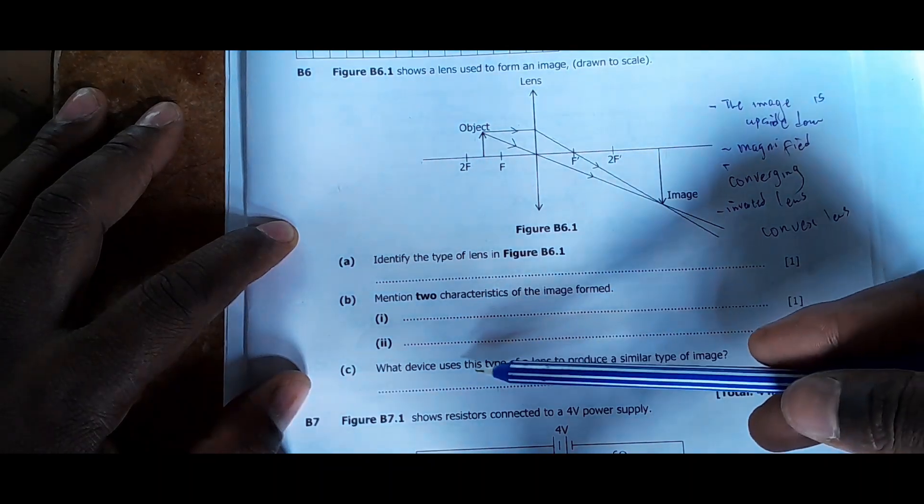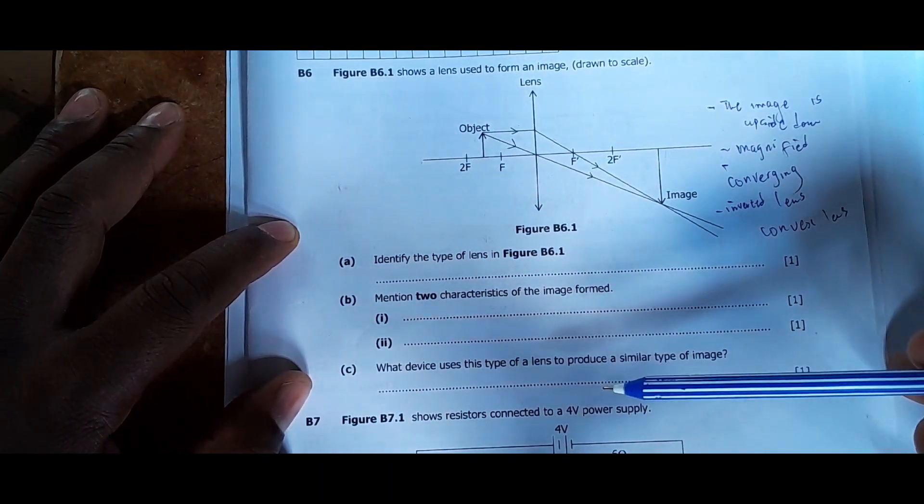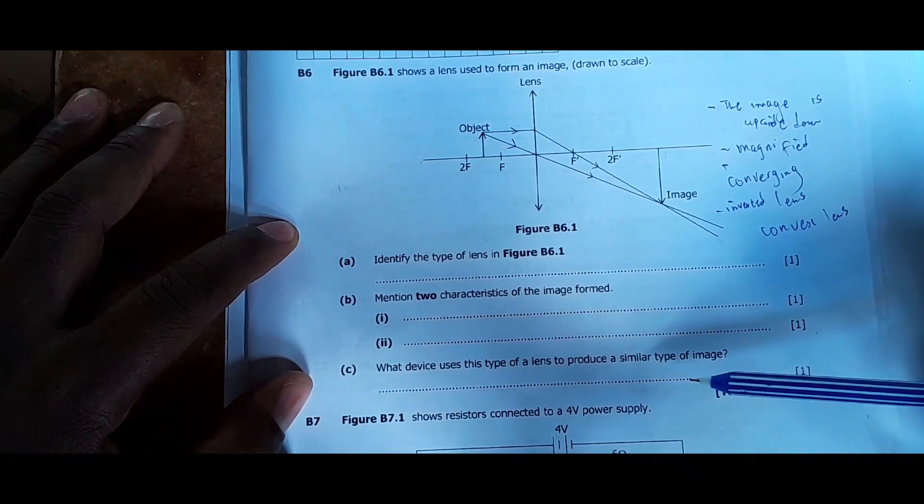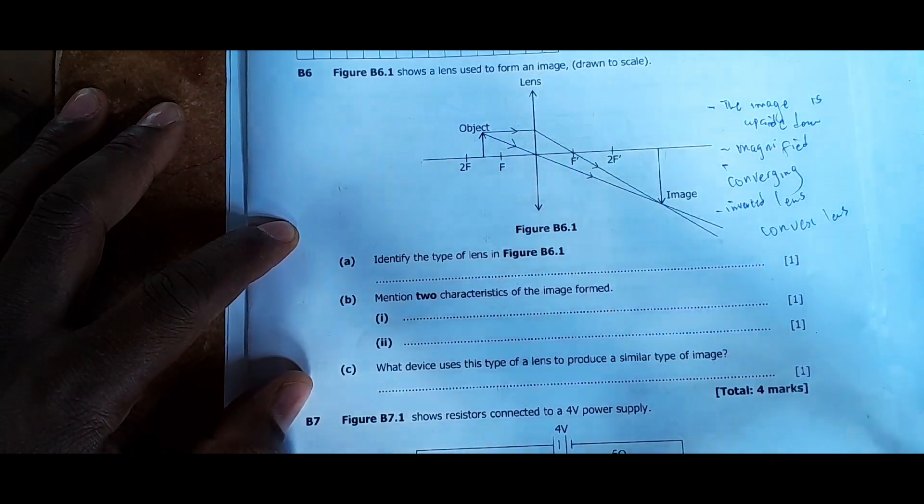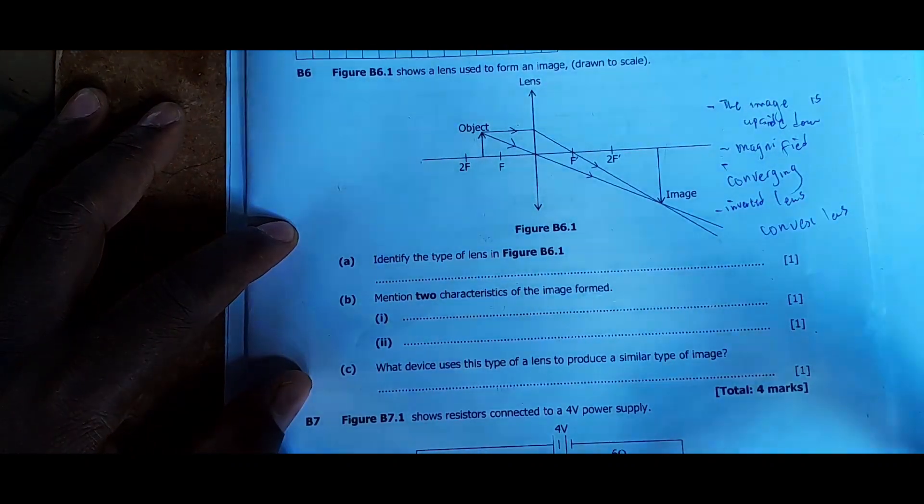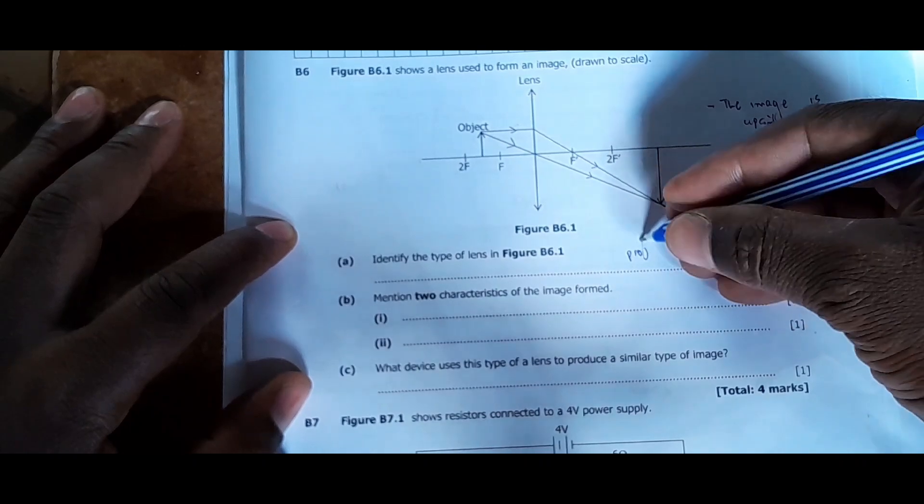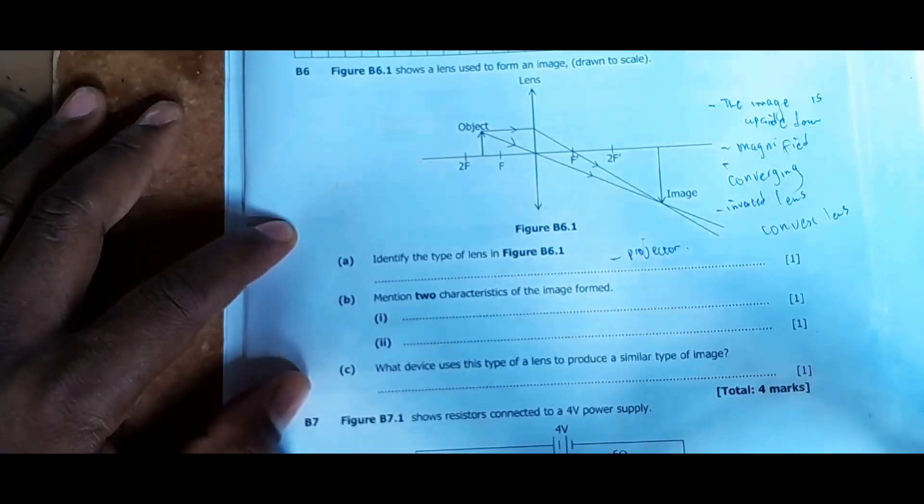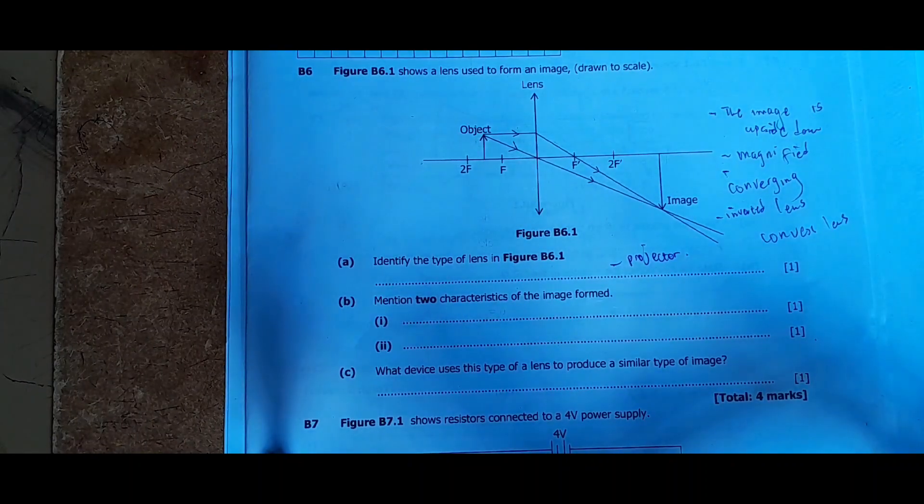Now this third question which is C is saying what device uses this type of lens to produce a similar type of image. So the device that uses this type of lens is a projector. Projector, let me write the name here. Projector, and we are done with this question. We can move on to the next question.